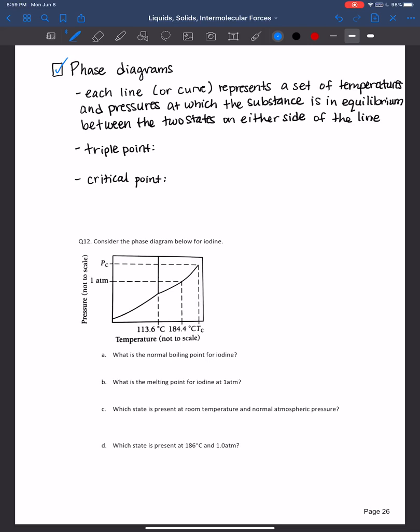And we learned from the video that each line or curve represents a set of temperatures and pressures at which the substance is in equilibrium between the two states on either side of the line. So let's look at the problem below and analyze this phase diagram for iodine.